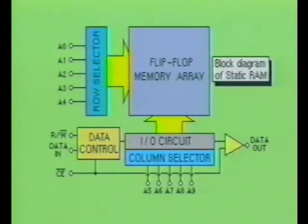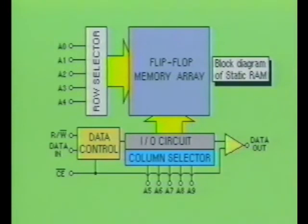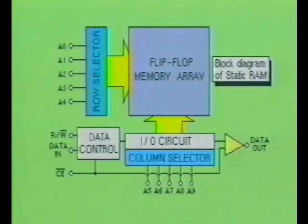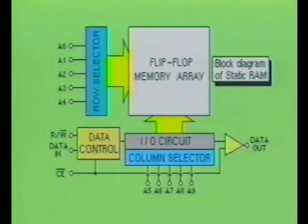The memory organization used within the static RAM is similar to that used in read-only memory devices. As you can see, the static RAM uses a row selector section which contains decoder circuitry, a column selector section which also contains decoder circuitry, data control and input-output control circuitry, and a memory array of semiconductor devices.